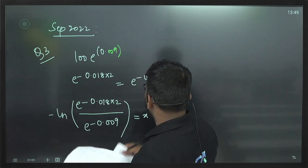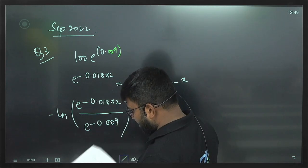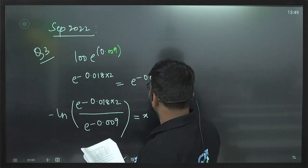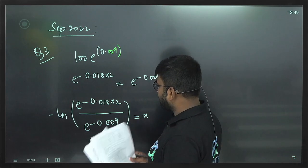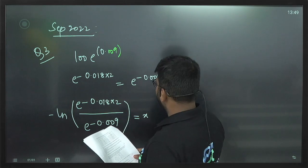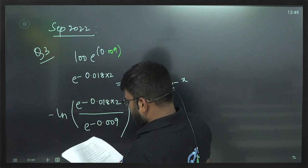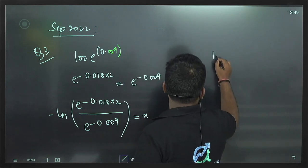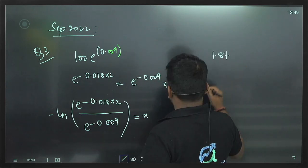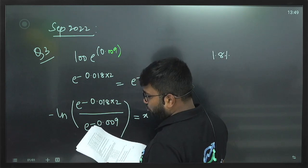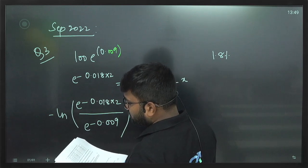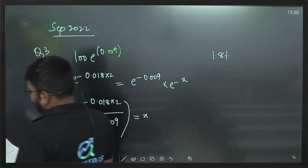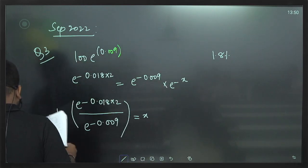This was done using the discounting method. Even if you don't put the minus sign it won't be a problem. Basically 1.8 is your spot rate for two years, and 0.9 is for the first year. We need to find the second year's rate.